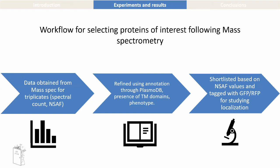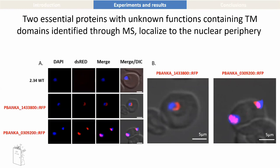We picked two such proteins and tagged them with fluorescent markers to study their localization. Here I'm showing you two proteins identified through mass spec. The wild-type shows no signals near the nuclear periphery, but our two identified proteins have clear signals near the nuclear periphery — they could very well be strong candidates for being nuclear pore proteins. Now there is a lot of work to be done, but the first step was identifying what these components are, because if we don't know the components of the complex, we will never know how important they are or what they actually do. We have a couple more such proteins we are currently looking at, and we are also trying to study their function.